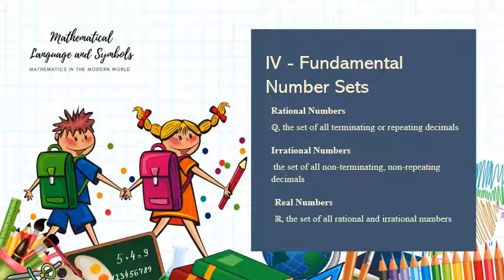We also have rational numbers, represented by ℚ, the set of all terminating or repeating decimals that can be represented by x/y where y should not be equal to zero. Irrational numbers are the set of all non-terminating, non-repeating decimals. Real numbers are the set of all rational and irrational numbers. If you try to imagine the covering part or the umbrella of all these sets, real numbers are at the top, divided by rational and irrational numbers. Under rational numbers, we have integers, whole numbers, and counting numbers.